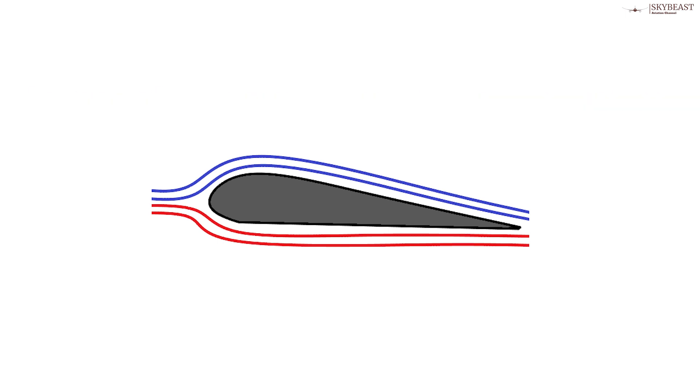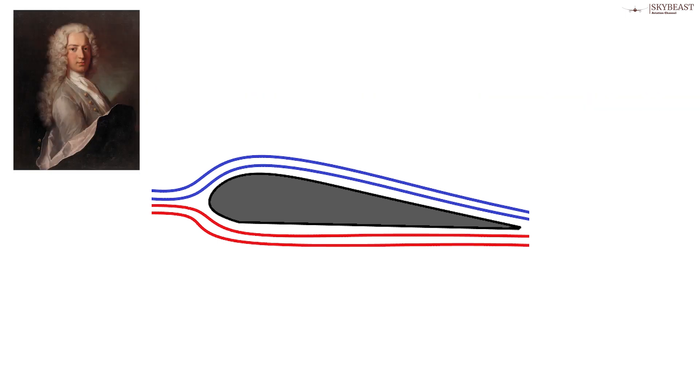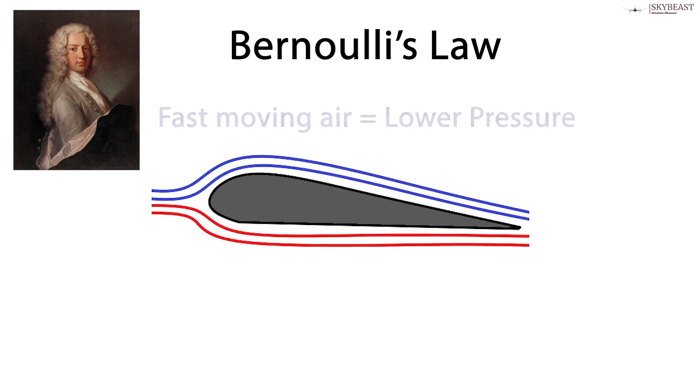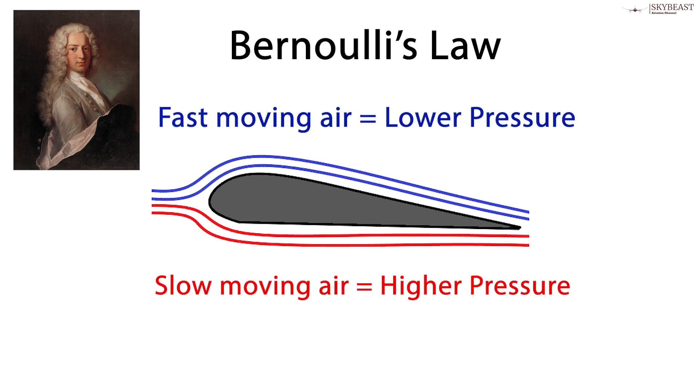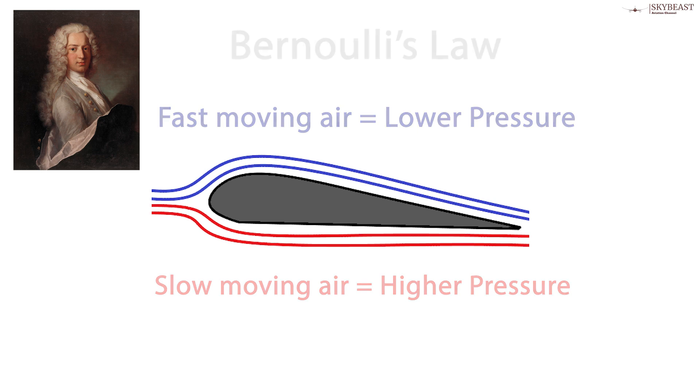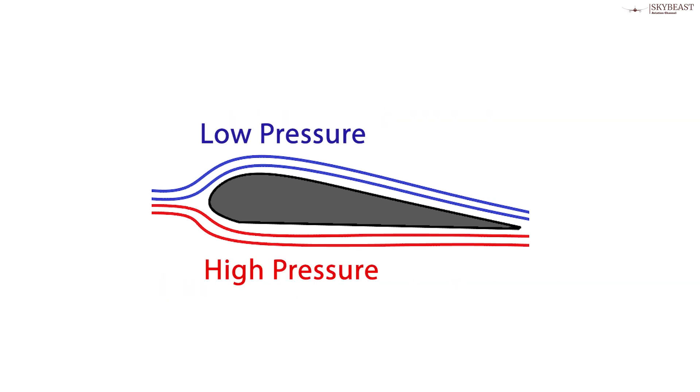According to a principle of aerodynamics called Bernoulli's law, fast-moving air is at lower pressure than slow-moving air. So the pressure above the wing is lower than the pressure below, and this creates the lift that powers the plane upward.